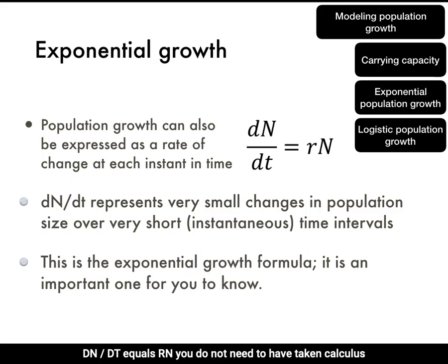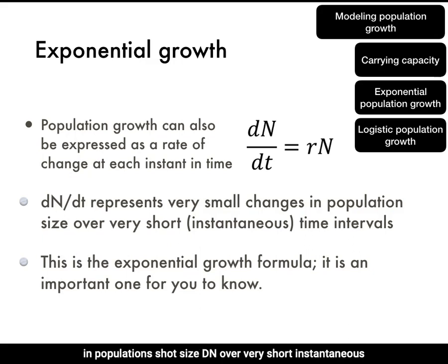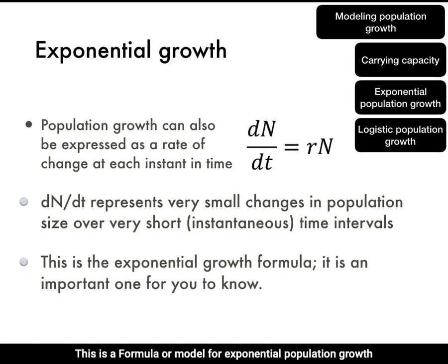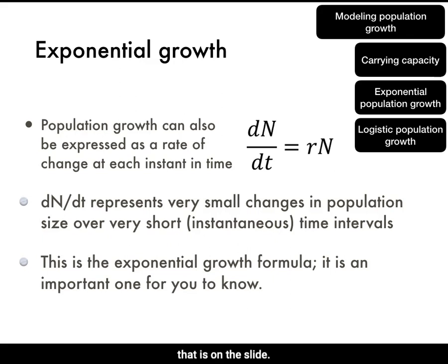You do not need to have taken calculus to understand this formula. dN divided by dt represents very small changes in population size — dN — over very short, instantaneous time intervals, dt. This is a formula for exponential population growth, and it is highly important that you understand this formula.